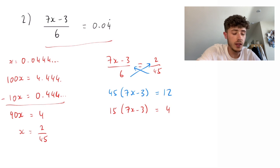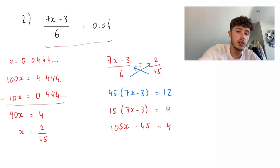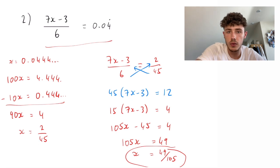If we expand out our bracket, 15 times 7 gives us 105x minus 45 equals 4. If we add the 45 across, 105x equals 49 and x equals 49 over 105. And you can simplify that as you need to.